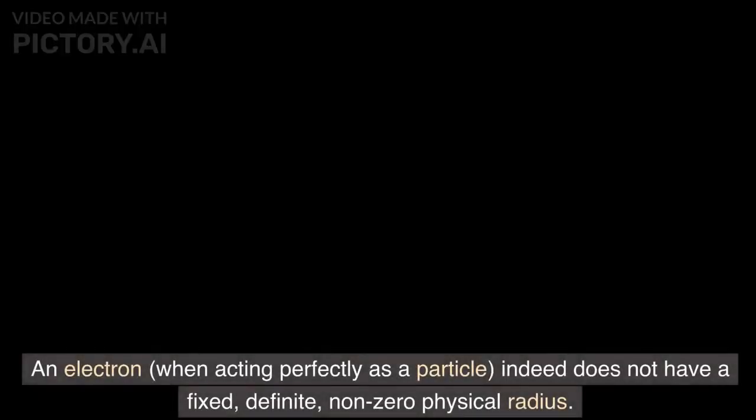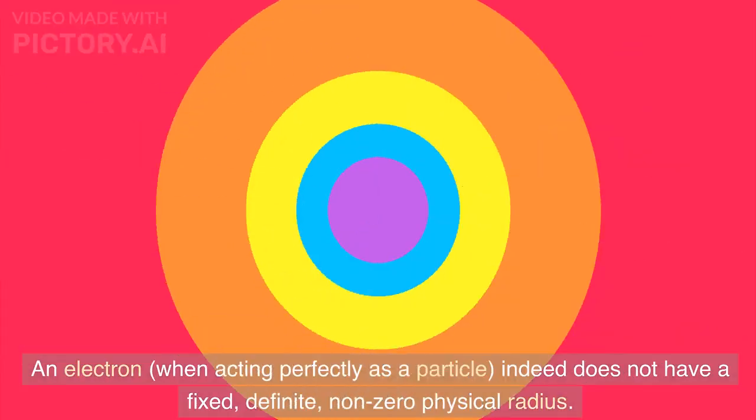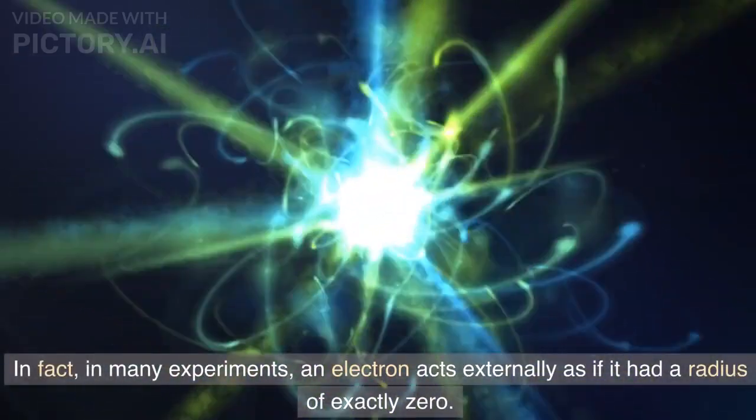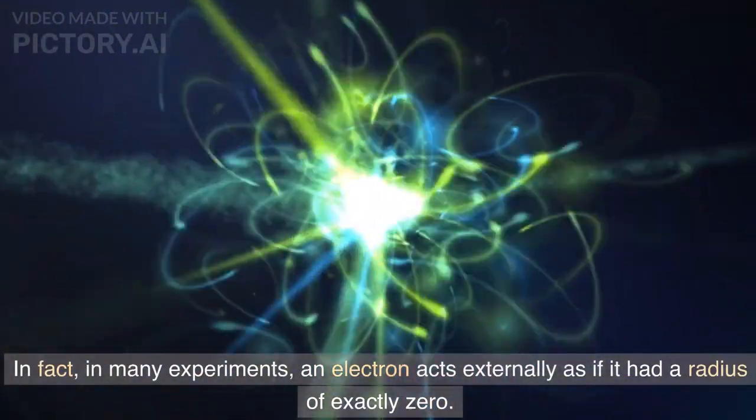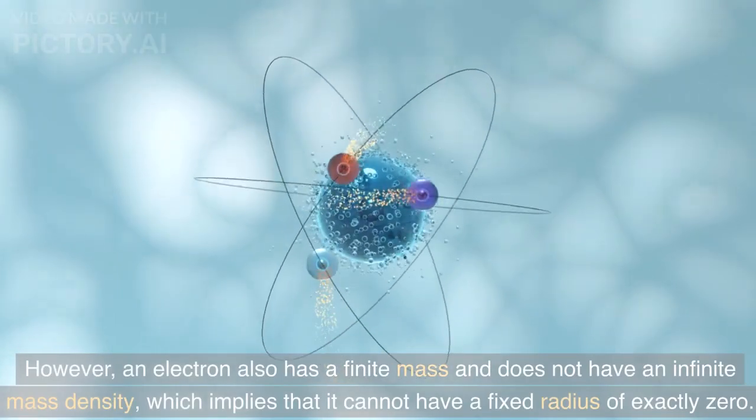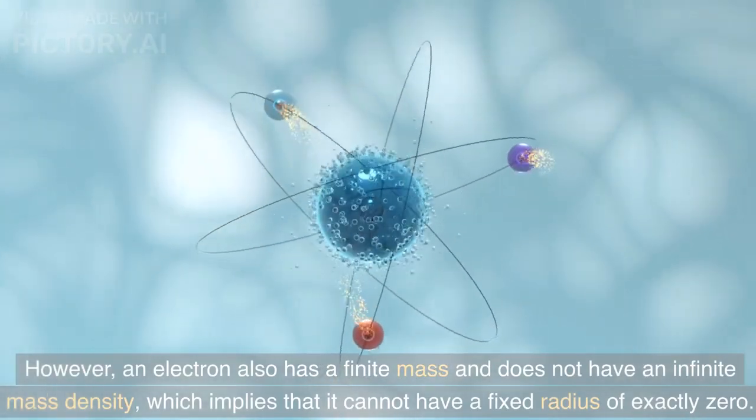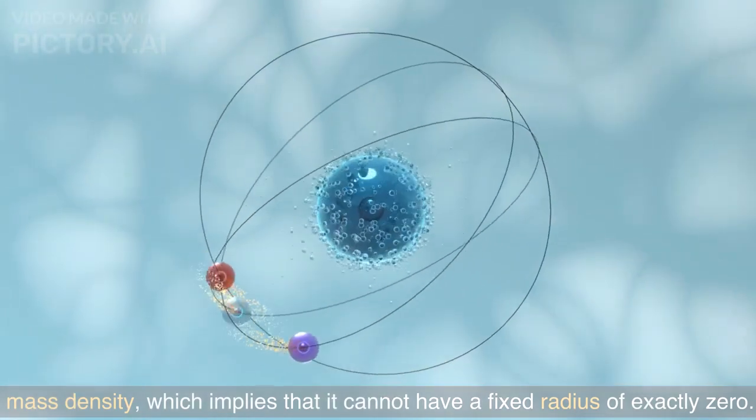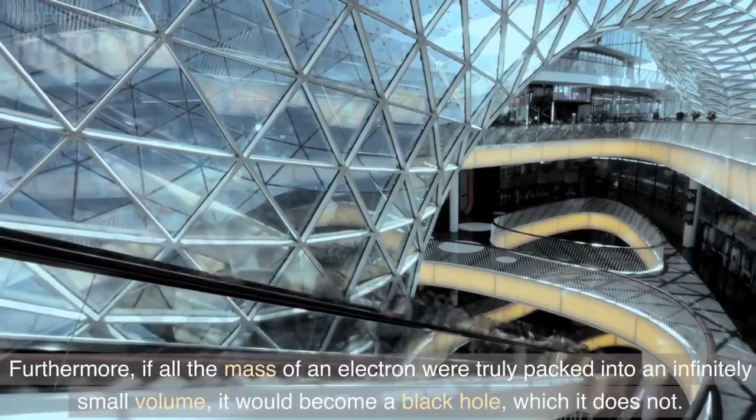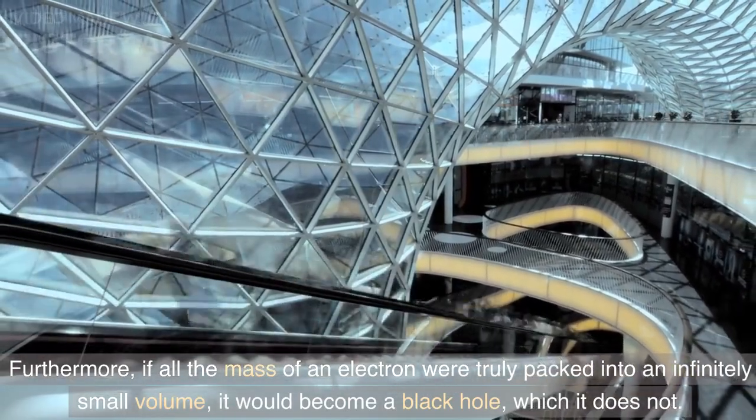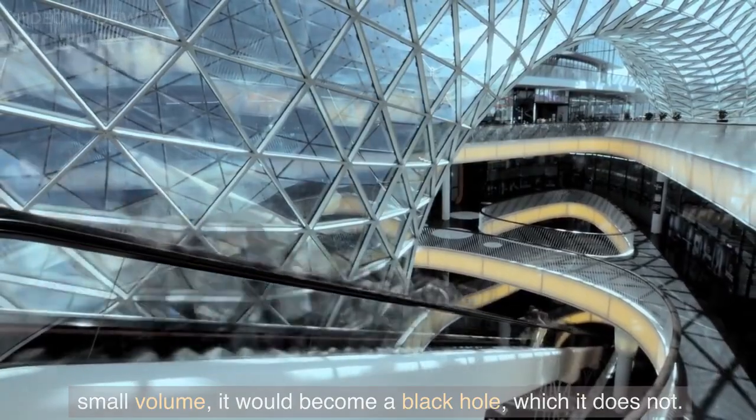An electron, when acting perfectly as a particle, indeed does not have a fixed, definite, non-zero physical radius. In fact, in many experiments, an electron acts externally as if it had a radius of exactly zero. However, an electron also has a finite mass and does not have an infinite mass density, which implies that it cannot have a fixed radius of exactly zero. Furthermore, if all the mass of an electron were truly packed into an infinitely small volume, it would become a black hole, which it does not.